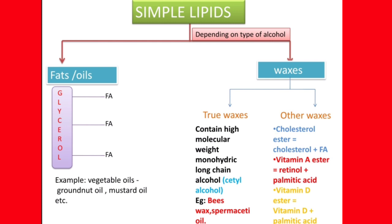The most common alcohol found is cetyl alcohol, present in beeswax and sperm whale oil. Coming to other waxes, the examples are cholesterol ester, which consists of cholesterol plus fatty acid; Vitamin A ester, whose composition is retinol plus palmitic acid — here palmitic acid is the fatty acid; and Vitamin D ester, which consists of Vitamin D plus palmitic acid.